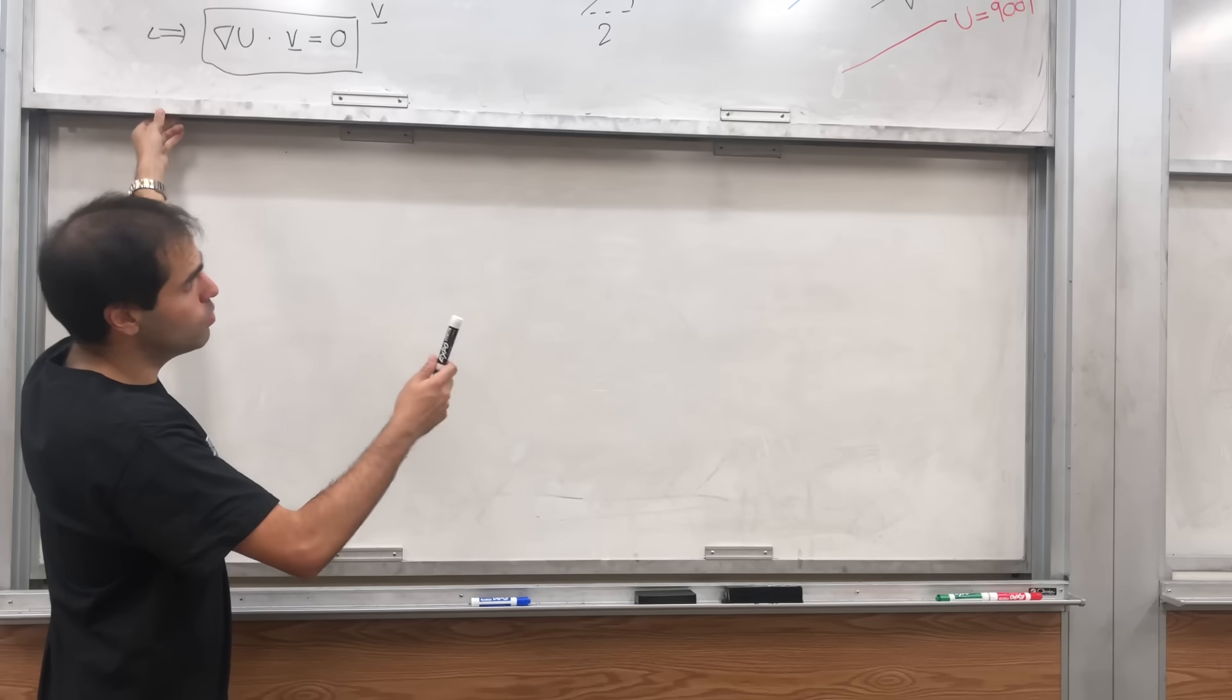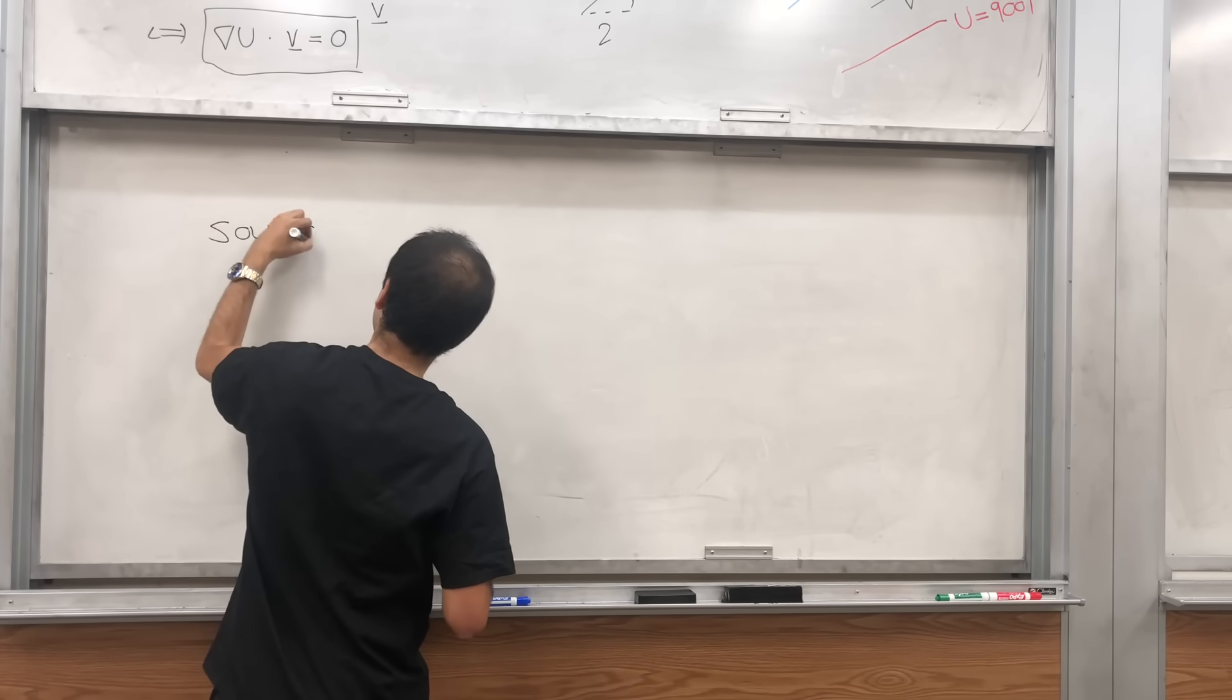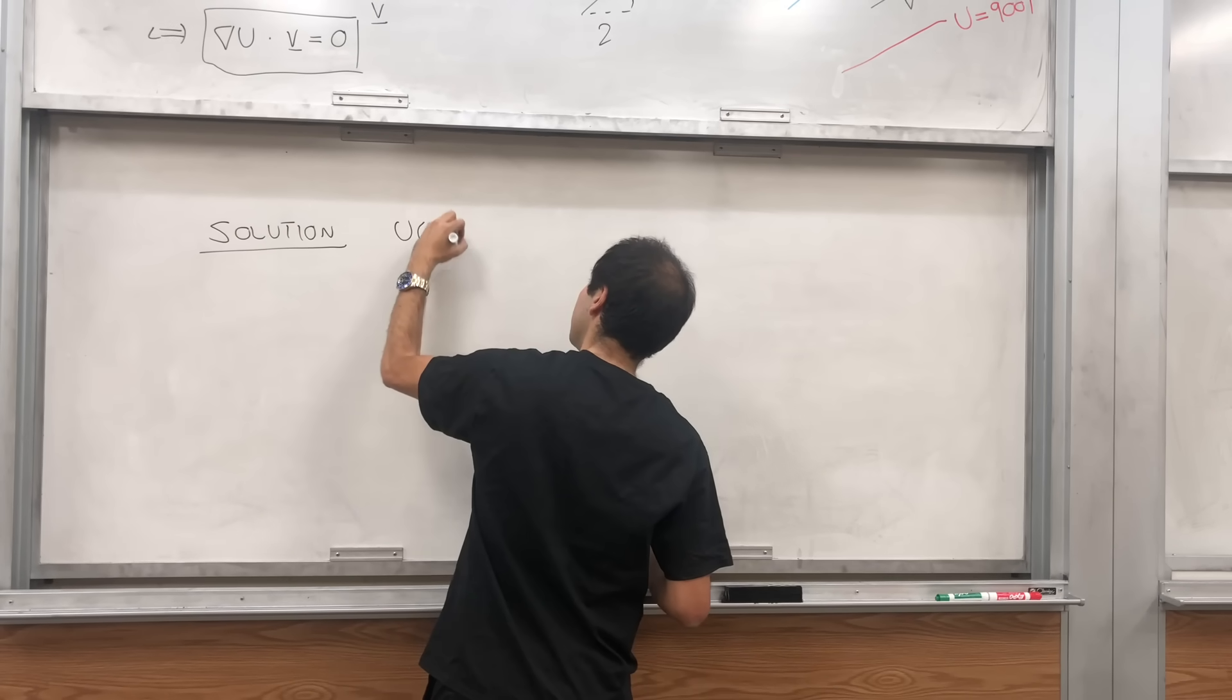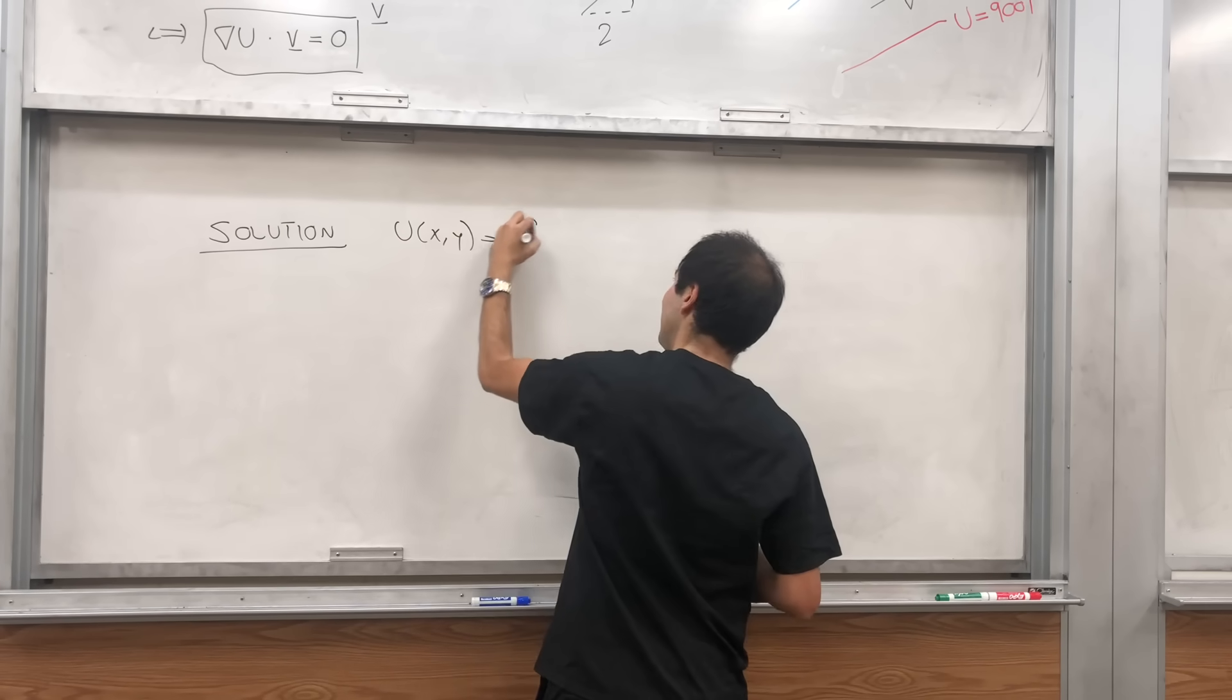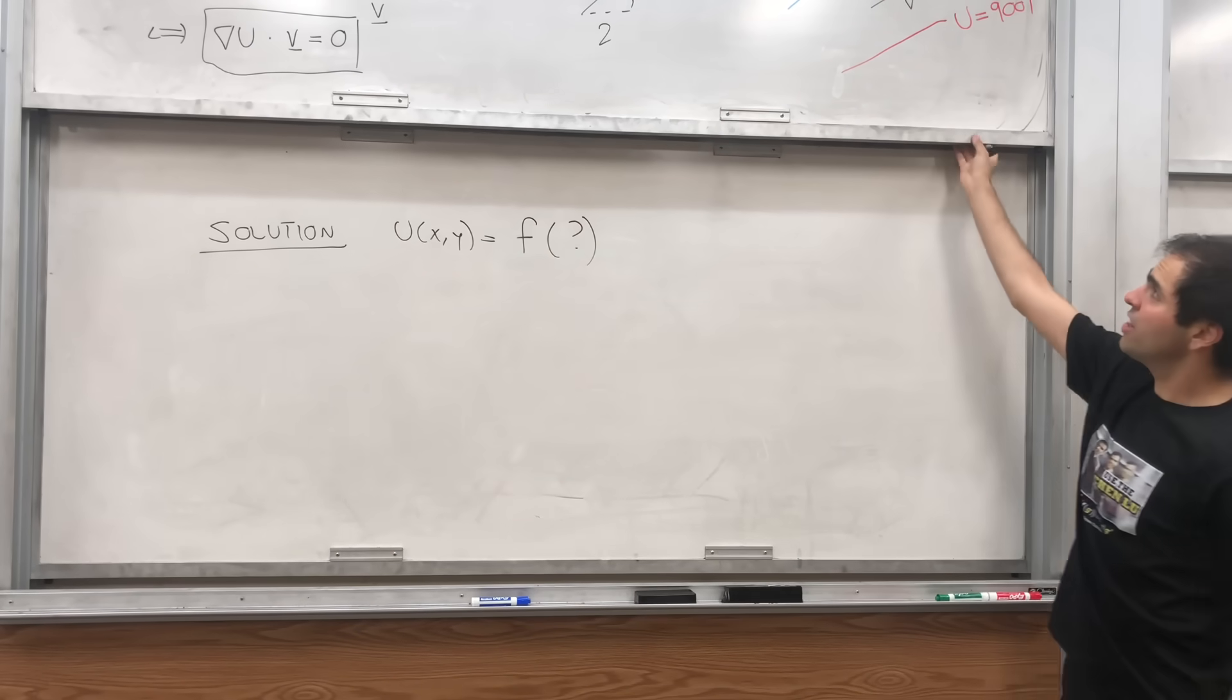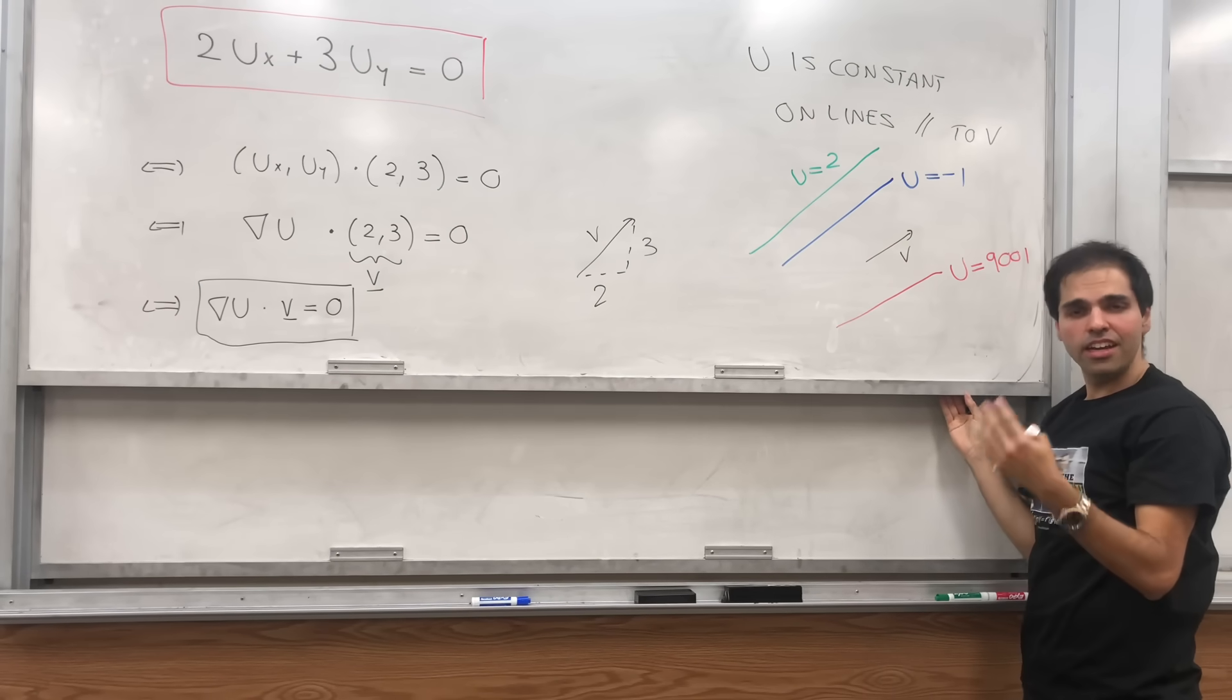So in other words, what we would like to say, our solution, it's simply u(x,y) is any function of question mark, where question mark is a variable that characterizes each line.